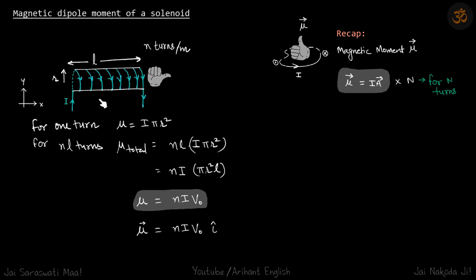What will be the magnitude? For one turn, μ = iA = i·πR². For length L, if there are n turns per meter, L length will have nL turns.